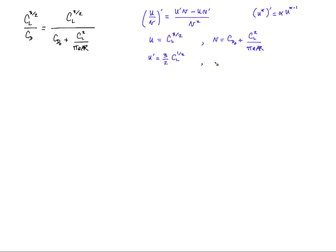And v prime: CD zero is independent of lift, it's the drag at zero lift, so we have simply... I'm going to plug that back to write that the derivative of CL to the three halves over CD with respect to CL is equal to u prime times v.